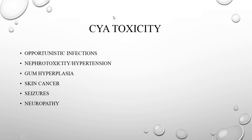Cyclosporine A has many adverse drug reactions. One commonly seen is opportunistic infections — an infection that a normal healthy person wouldn't get, or is abnormally severe. Classically, and a really important one to remember, is nephrotoxicity, which can lead to hypertension. Cyclosporine A can also lead to gum hyperplasia, can cause skin cancer, seizures, and neuropathy.